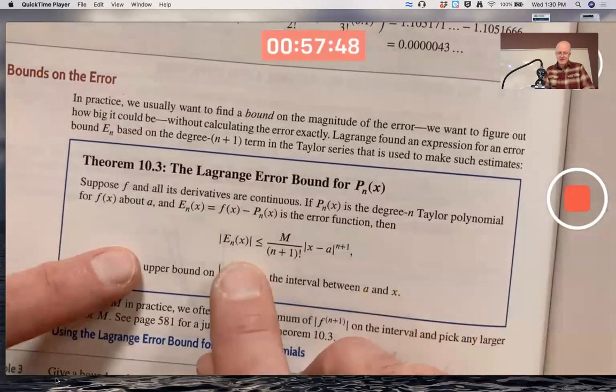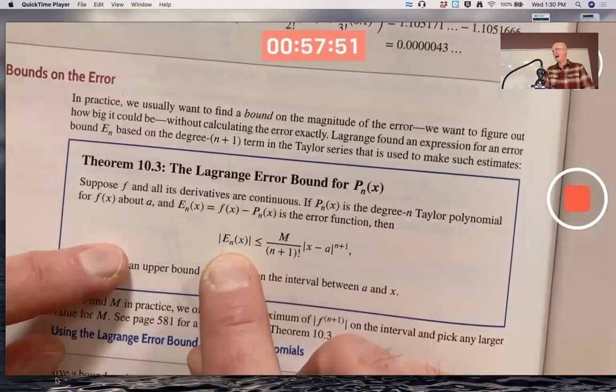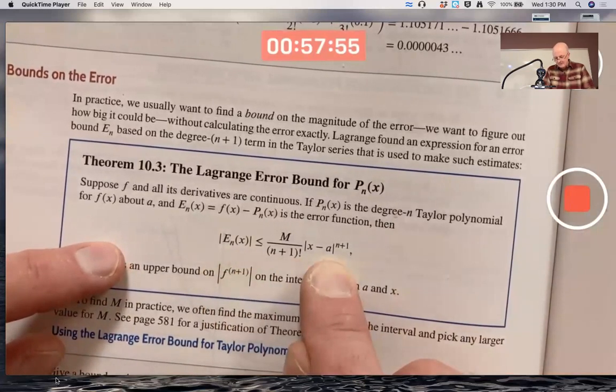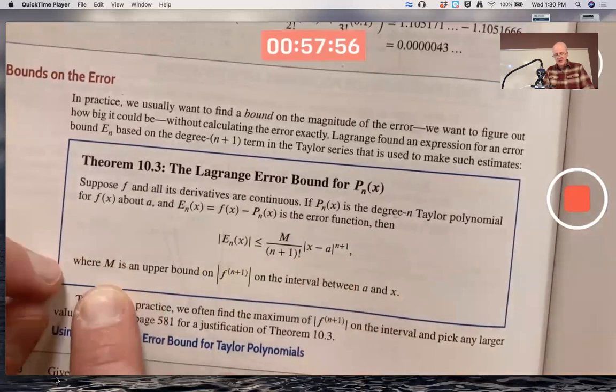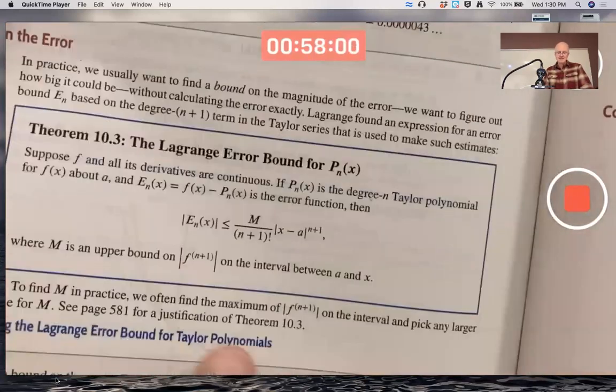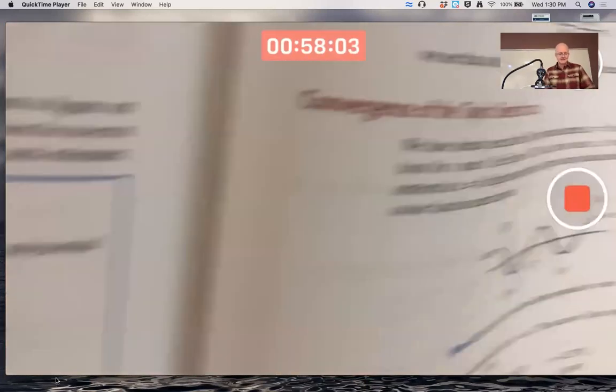The conclusion is, then, the absolute error, the absolute value of the error, is less than or equal to what you see there. And here's what I want you to change. Where M is an upper bound of this derivative on this interval, I want you to write it like this.